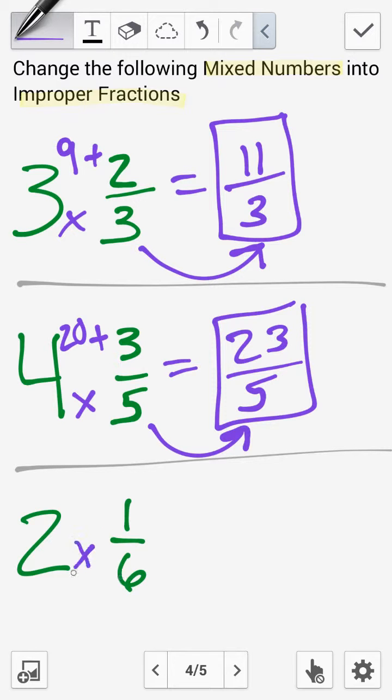In 2 and 1 sixths, we multiply the denominator by the whole number. So 6 times 2 is 12. Add the numerator. And we end up with 13. And the 6 stays the same on the bottom. So it's 13 over 6.